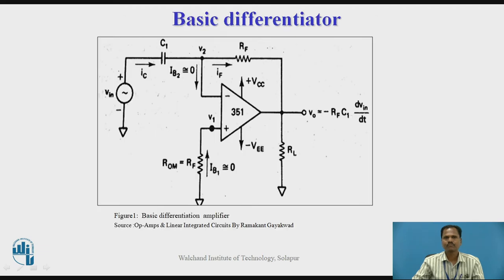Figure 1 shows the basic differentiation amplifier. A basic differentiator can be constructed from a basic inverting amplifier with negative feedback, in which the input resistor R1 is replaced by capacitor C1. The input voltage to be differentiated is applied to the inverting input through capacitor C1. RF is the feedback resistor.